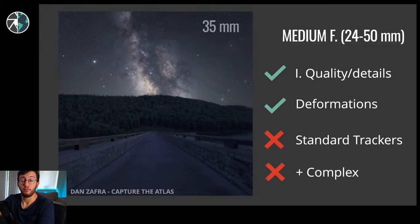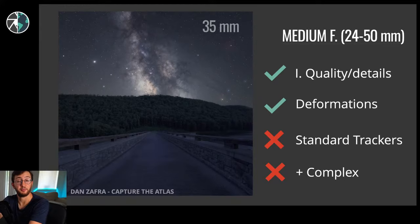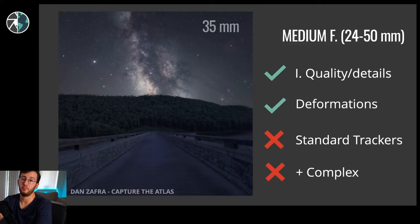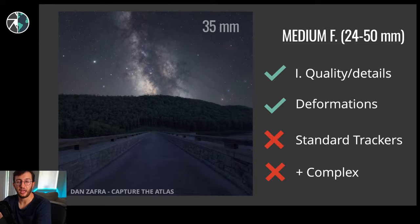Medium focal lengths between 24 and 50 millimeters give better image quality and more details. You capture more details and a better perspective of the Milky Way with less deformations. The cons of using a medium focal length are that they require at least a standard tracker, and they are more complex - requiring better polar alignment, better settings, and a bit more experience.